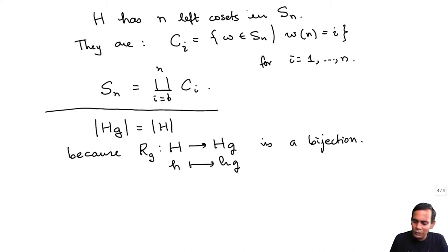Why is this a bijection? Well, it is a bijection because its inverse is given by right multiplication by g inverse. x goes to x g inverse, you can check that. So if you have an element in Hg, you multiply by g inverse, you will end up with an element in H. So each coset has the same cardinality as the subgroup itself.